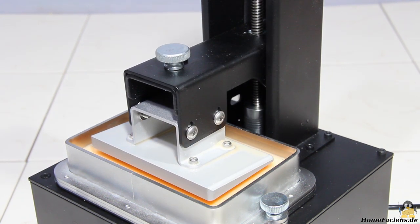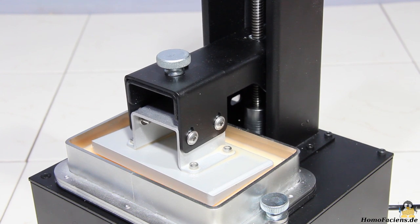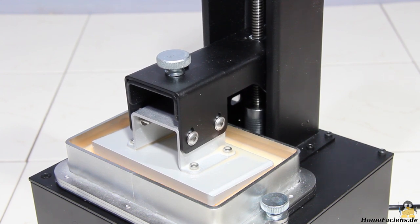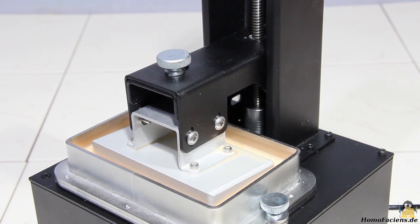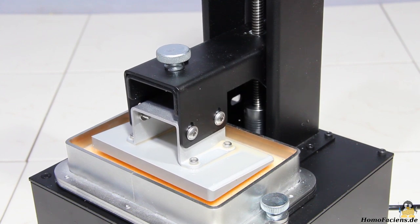The layer thickness is set to 0.05mm. With an object height of 20.2mm we get a total of 404 layers to be printed. The Orange 10 needs a total of 90 minutes for this job.